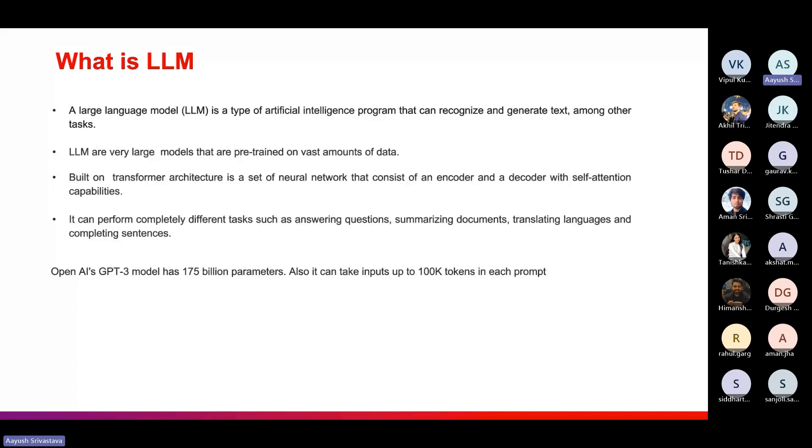An LLM can perform a multitude of tasks such as answering questions, summarizing documents, translating languages, and completing sentences. One of the most well-known examples is OpenAI's ChatGPT, trained on 175 billion parameters. As an input it can take up to 100,000 tokens for a single prompt, meaning you can provide loads of paragraphs as input and it will still generate a response.